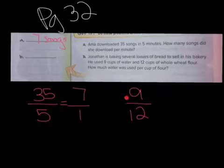So simplify. What is the greatest common factor of 9 and 12? If you're thinking 3, you are correct. These are both products of 3 of the multiplication table of 3. When we simplify 9 over 12, we get 3 over 4. And our question is, how much water was used per cup of flour?